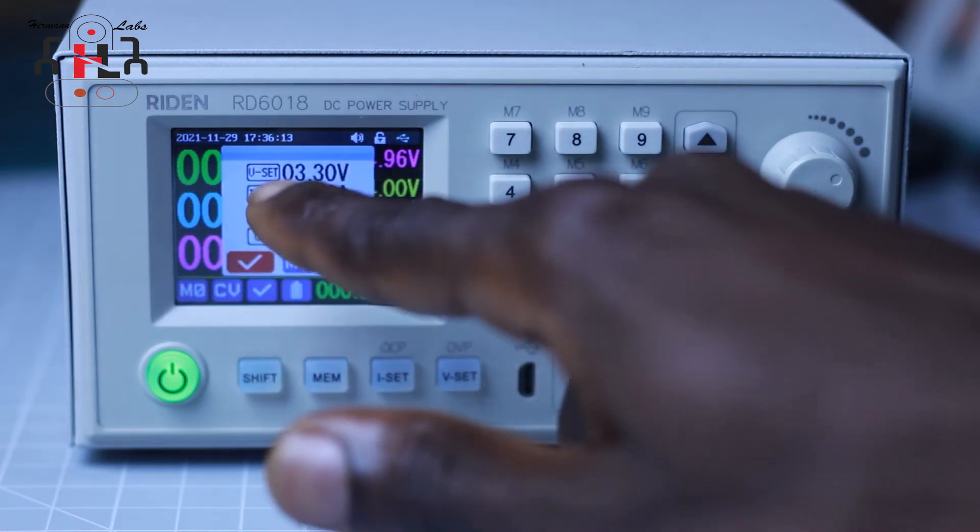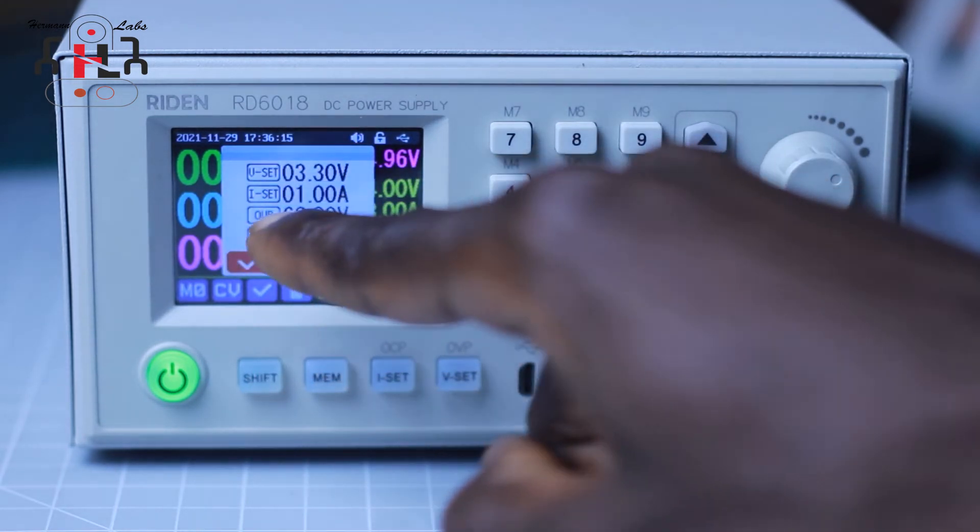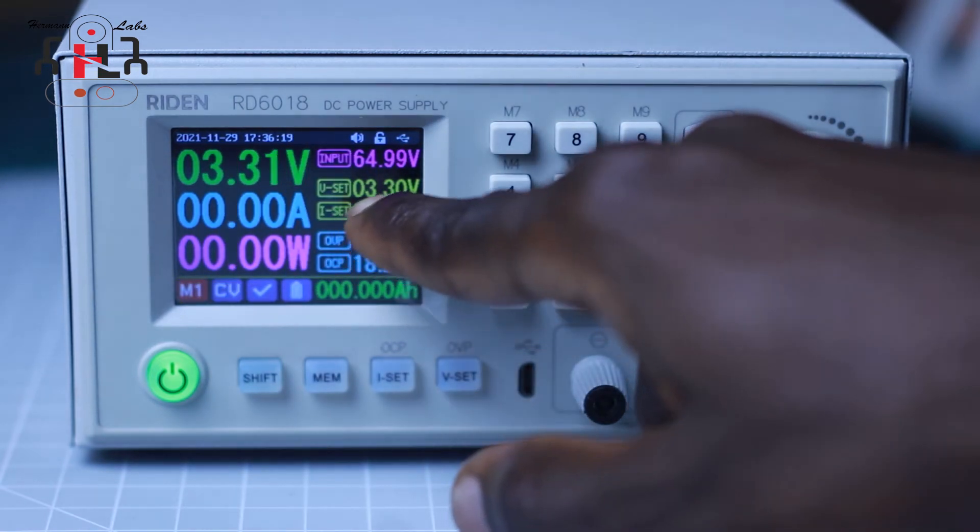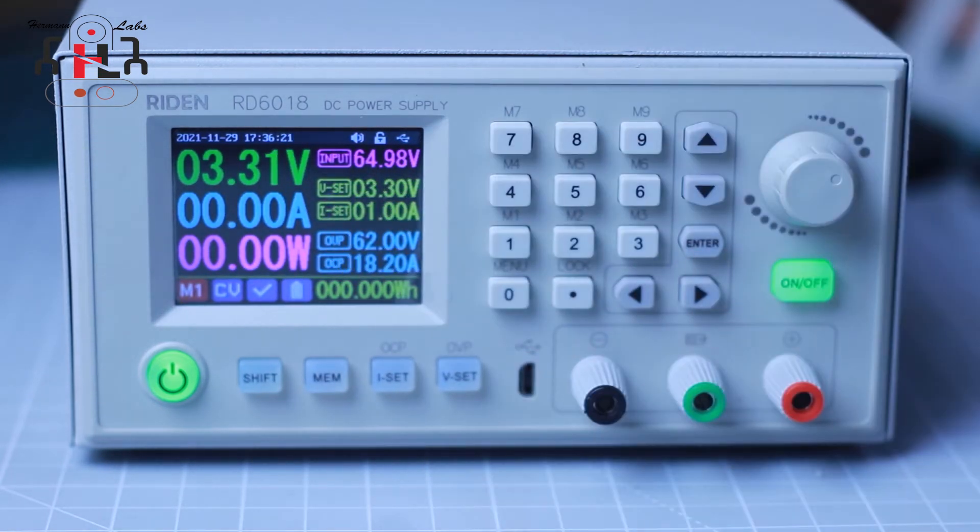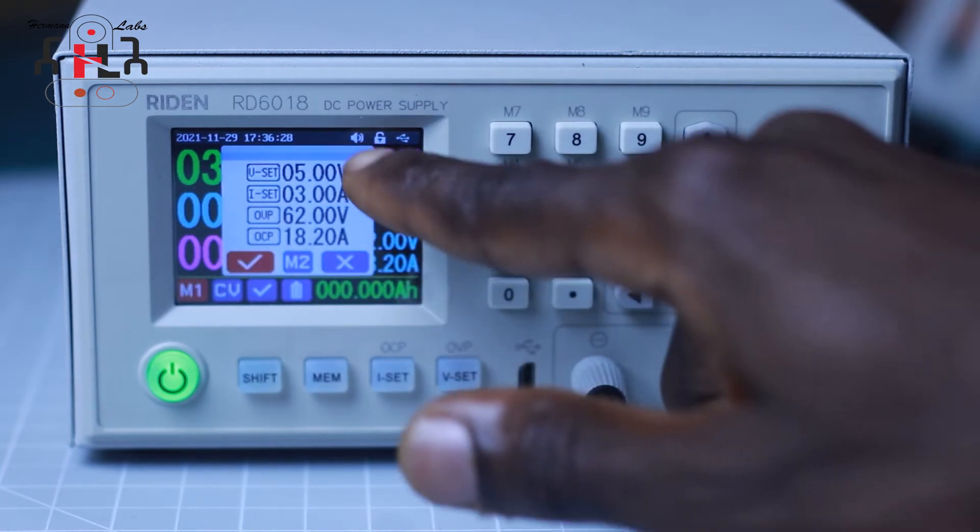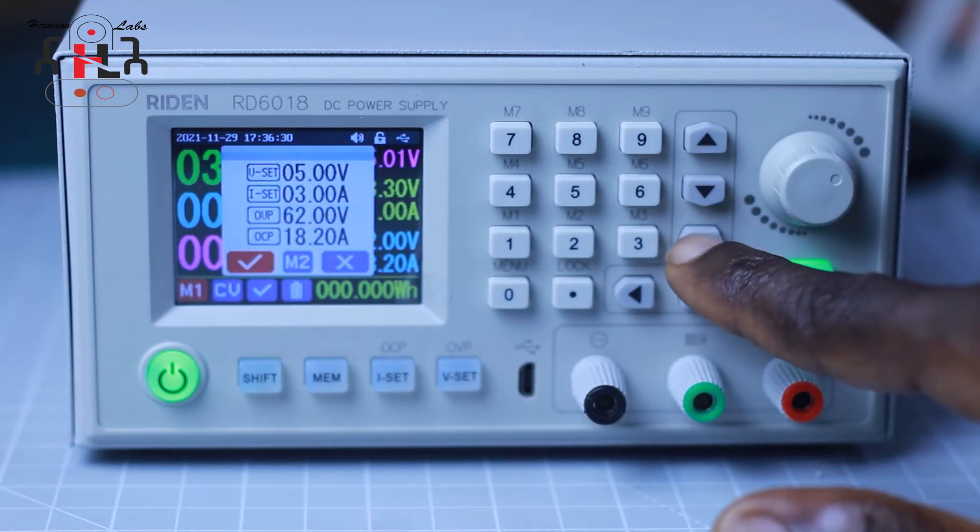As you can see, the content of this memory is displayed on the OLED display and we can now press ON-OFF to make it available. This feature is very good as it saves us time and helps us prevent expensive mistakes.